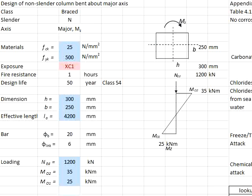A spreadsheet is used to help with the calculations. The column is braced, non-slender, with bending at its major axis. Concrete strength 25, steel strength 500, exposure class XC1, fire resistance 1 hour, design life 50 years. The column dimensions are h equals 300 mm and b equals 250 mm. The effective length is 4.2 meters.